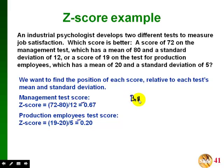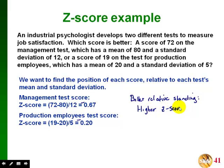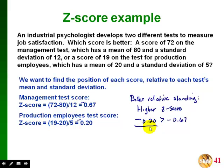The question was which of these two scores has better relative standing. Better relative standing with Z scores means having a higher Z score. Since both values are negative, negative 0.20 is actually a greater value than negative 0.67. So that means the score with Z equal to negative 0.20 corresponds to the score with better relative standing — that tells us the production employee's test score has better relative standing.